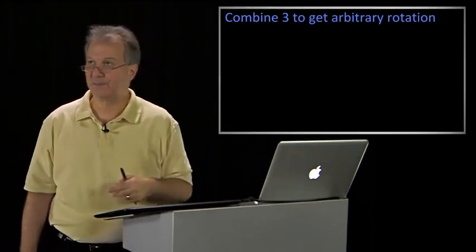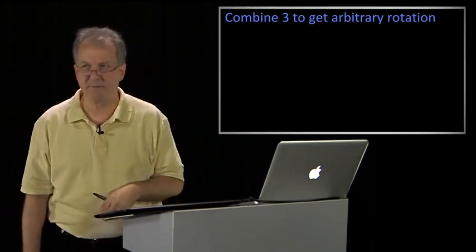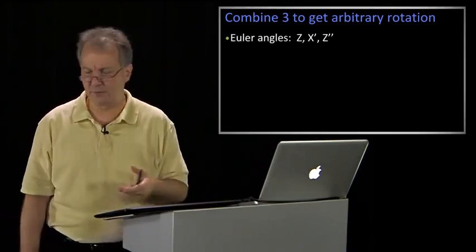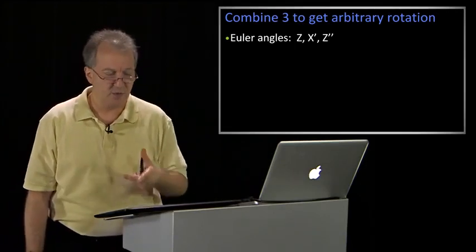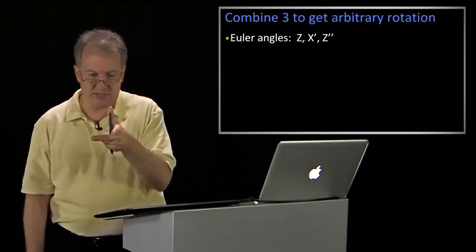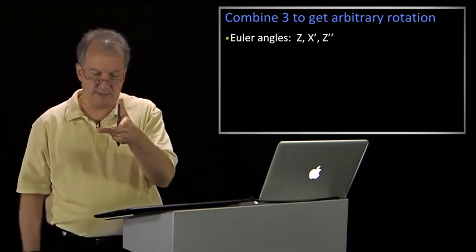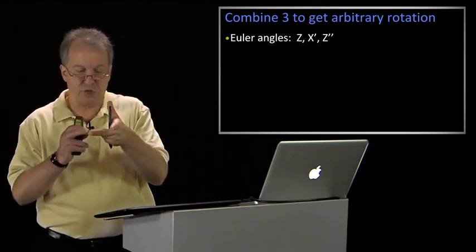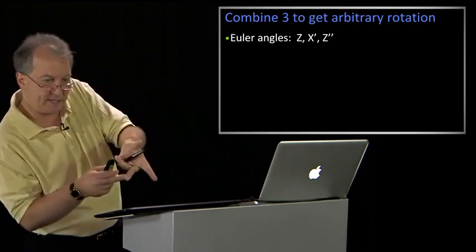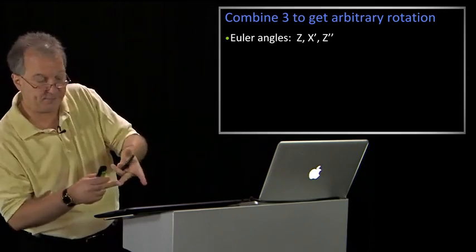Turns out there are many standards about how to do that. One that many of us know in math and computer vision are Euler angles. Euler angles say you rotate about z, rotate about the new x, and then you rotate about the new z again.